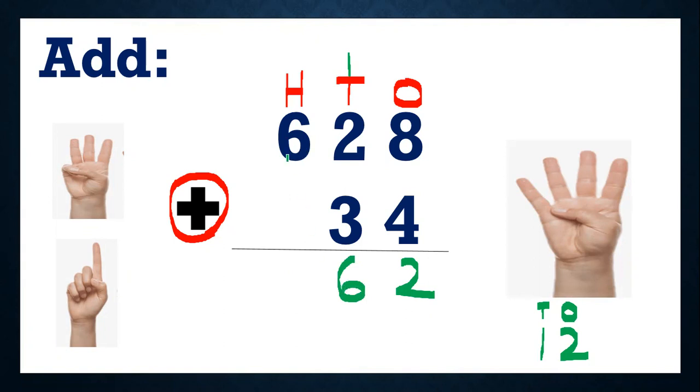Now, we will add hundreds place. So hundreds place, we have 6 here. Do I have any number here? No. So I will write 6 as it is. Okay, so I got the answer 662.